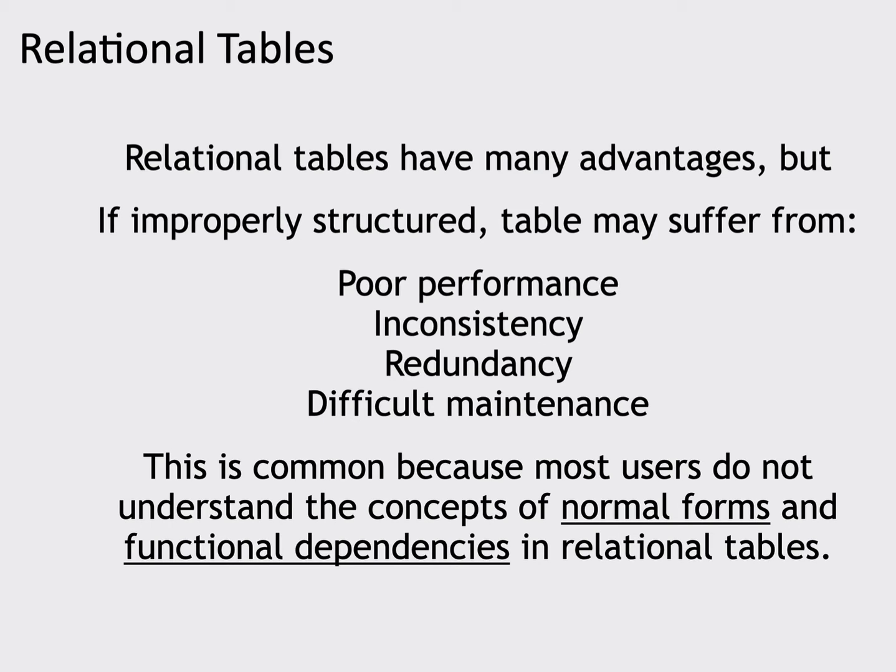I'd like to talk about normal forms in relational tables. Normal forms are the power behind the advantages of relational tables because they allow us to optimally split data and give us a way to combine it back together efficiently. A lot of people, when they create relational tables without understanding normal forms, can make them such that you do more harm than good — you get poor performance, redundancy, difficulty in maintenance, and the tables don't work well. Most of these problems come from not understanding normal forms and functional dependencies, or not being careful to make sure your data adhere to their requirements.